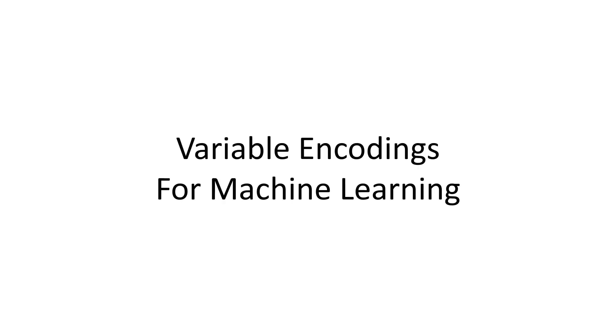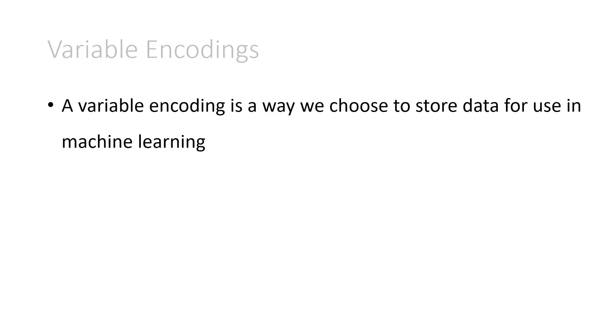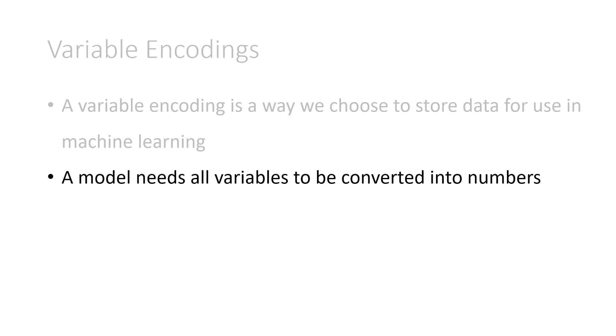Hey everyone, today we'll be talking about variable encodings for machine learning. Variable encodings. A variable encoding is a way we choose to store data for use in machine learning. We need these because a model needs all variables to be converted into numbers.